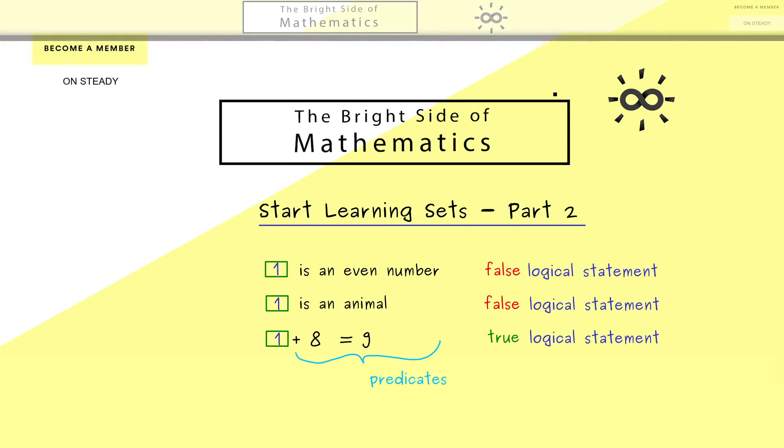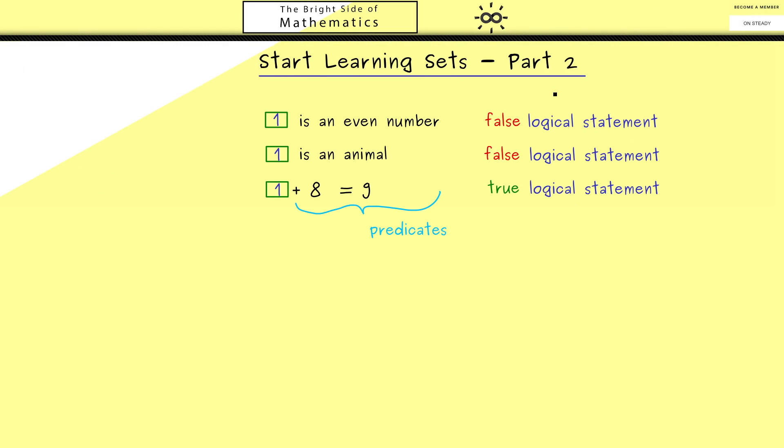A predicate is an expression with undetermined variables that ascribes a property to objects filled in for the variables. When we substitute a variable with something that doesn't contain any variables anymore, we get out a logical statement.